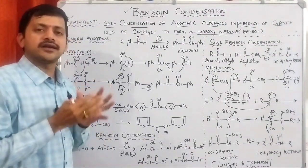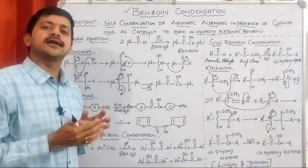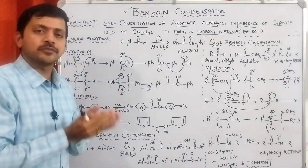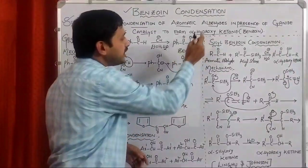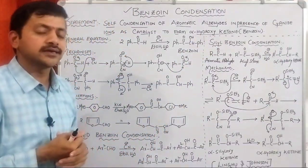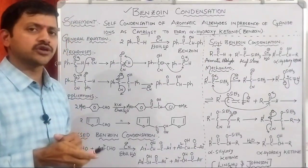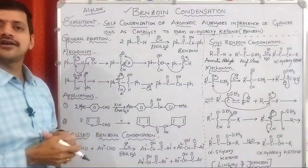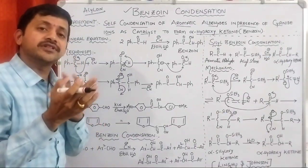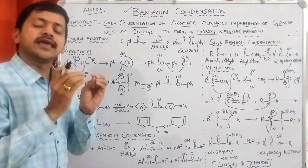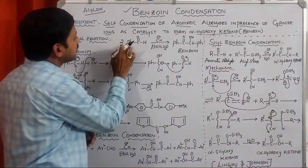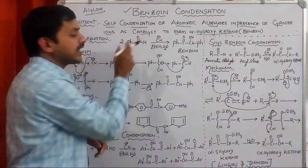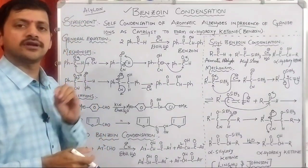What the statement is saying: we are taking aromatic aldehydes involving in self-condensation using cyanide catalyst to produce the corresponding alpha-hydroxy ketone, commonly called as benzoin. We had already heard the word acyloin — it is also an alpha-hydroxy ketone. The difference is that in acyloin, the aldehyde is aliphatic, but in benzoin, the aldehyde is aromatic. This is the simple differentiation we need to understand.